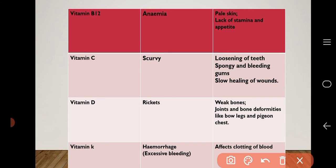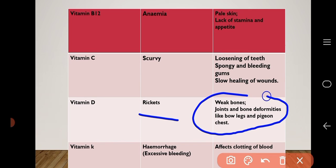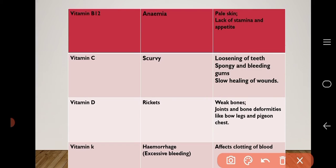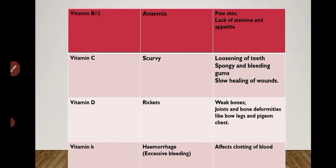Lack of vitamin D causes rickets; symptoms are weak bones, joint problems, and bone deformities like bow legs and pigeon chest. Lack of vitamin K causes hemorrhage — excessive bleeding; the symptom is that it affects the clotting of blood.